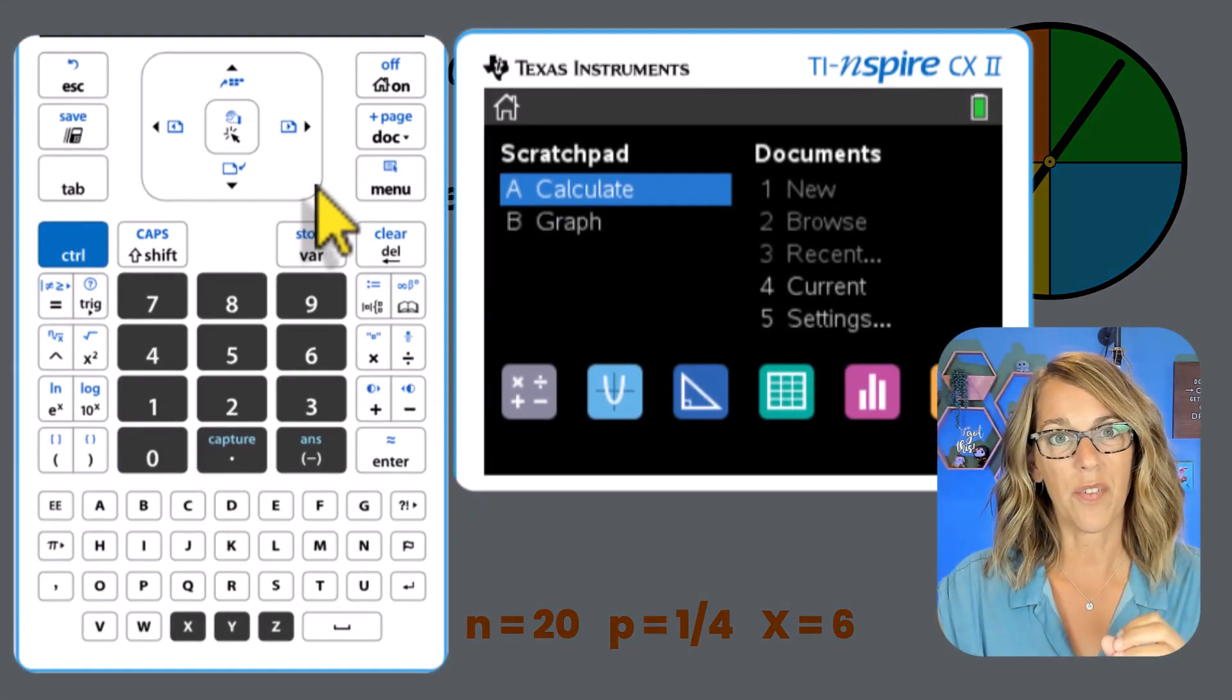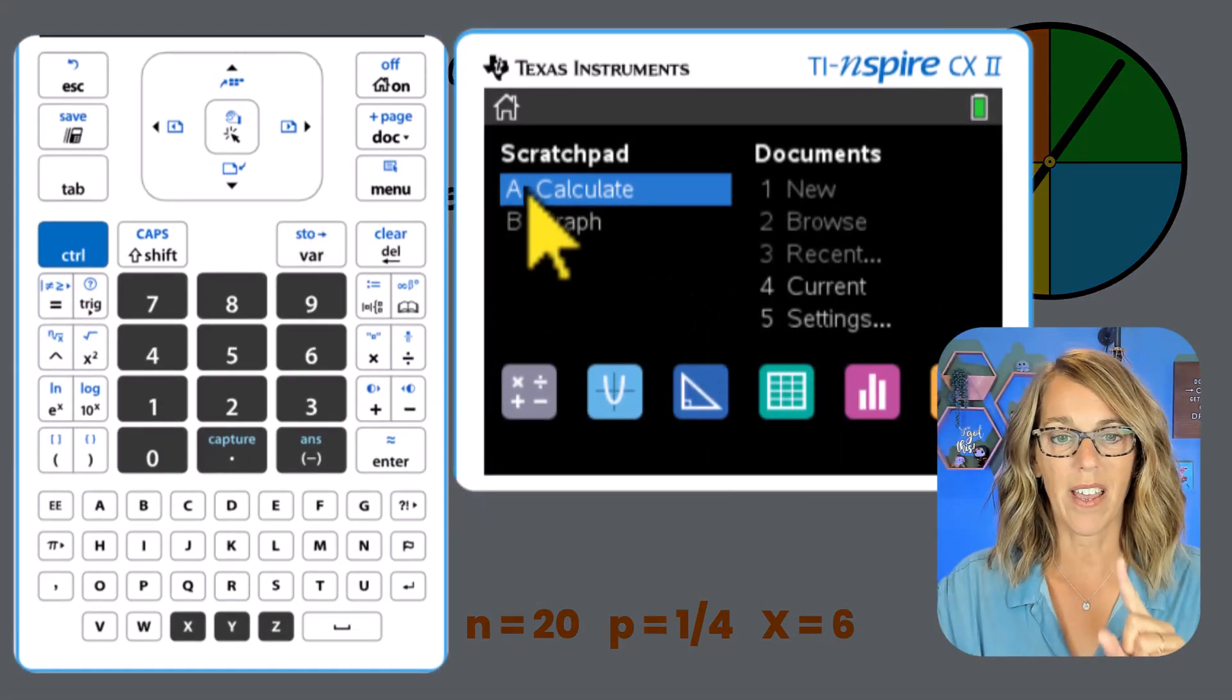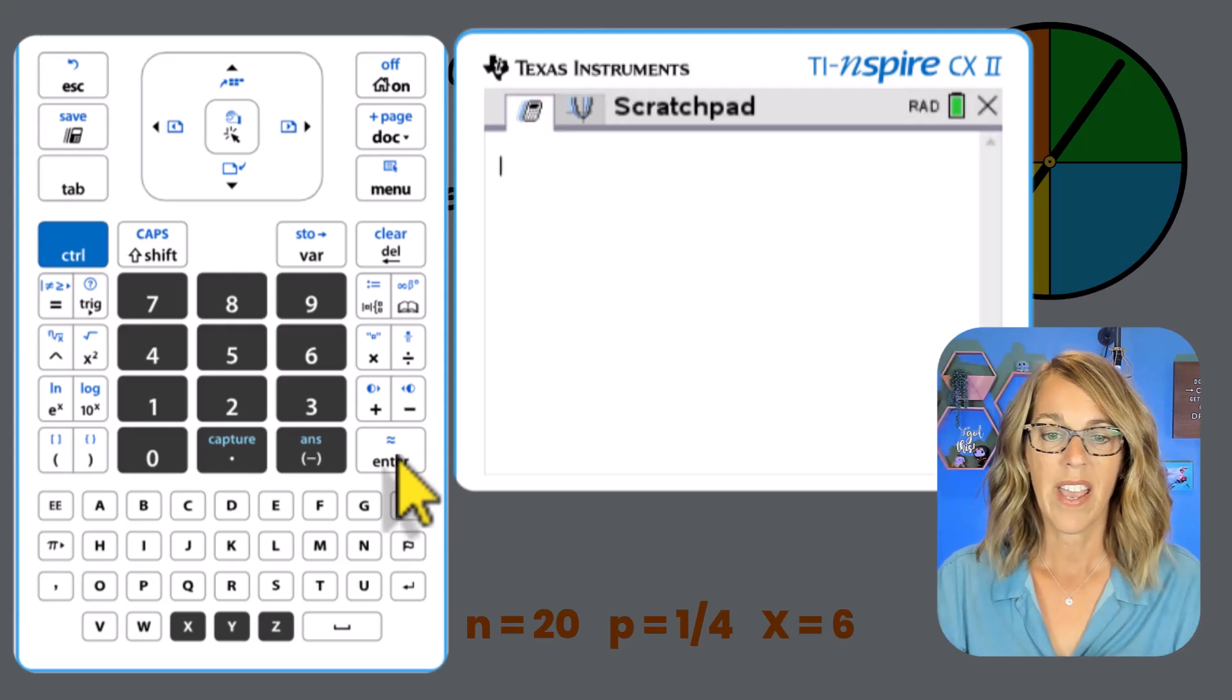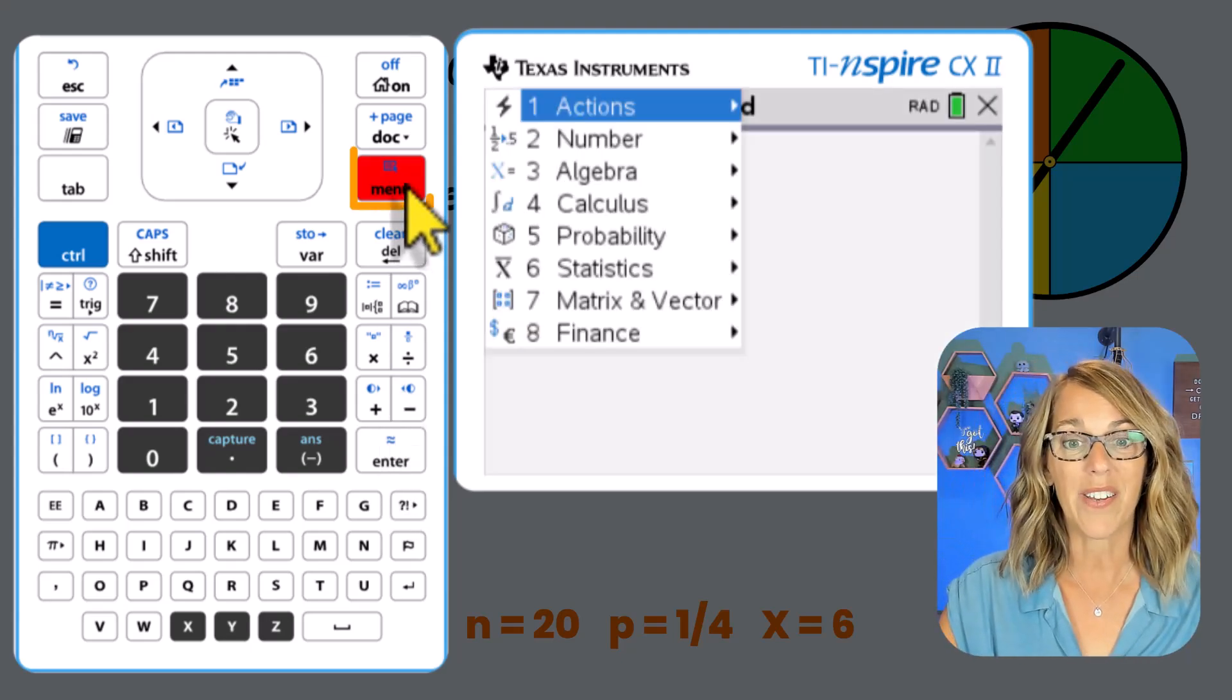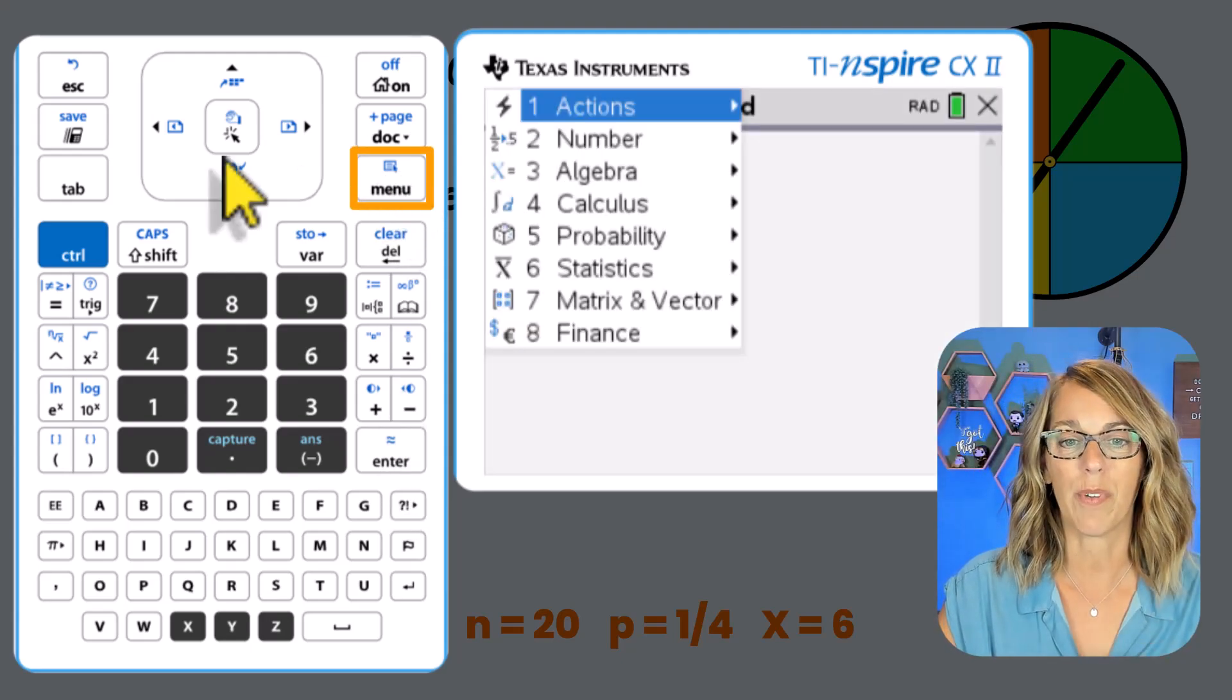To get to that screen that I showed you, we're just going to go right into a scratch pad. I've got A selected here, so I'm going to hit enter, and I want to go into the menu. I am looking for a distribution.